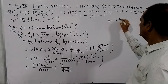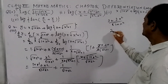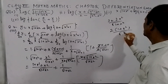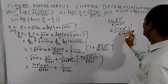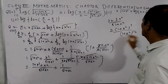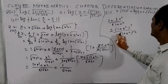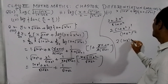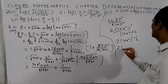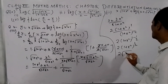So we get 2 plus 2x square upon root 1 plus x square, combined with 1 plus x square and root 1 plus x square terms. This simplifies further: 1 plus x square minus x square over 2 root 1 plus x square, giving 2 times 1 plus x square over root 1 plus x square.